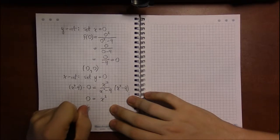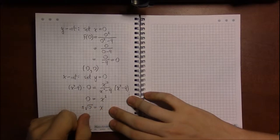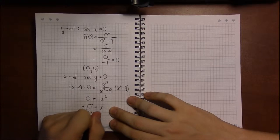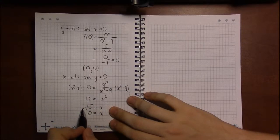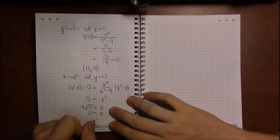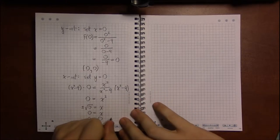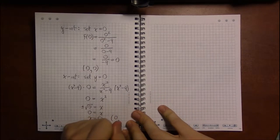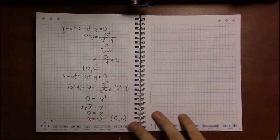we get plus or minus the square root of 0 equals x. That means 0 equals x, because the square root of 0 is 0, and positive and negative 0 are both just 0. So our only x-intercept is the point where x is 0, y is 0—(0, 0).